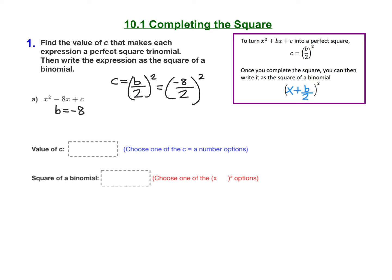Simplify inside the parentheses first. Negative 8 divided by 2 is negative 4, and then negative 4 squared, remember, means negative 4 times negative 4. And whenever we multiply a negative times a negative, we get a positive number.